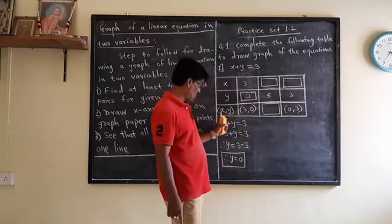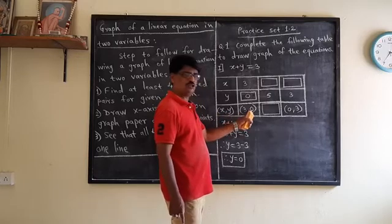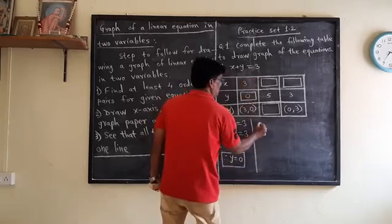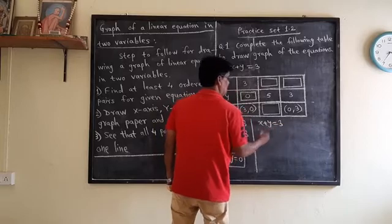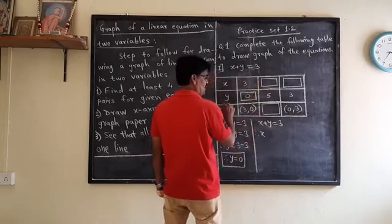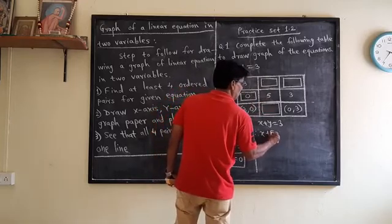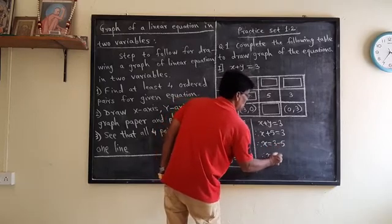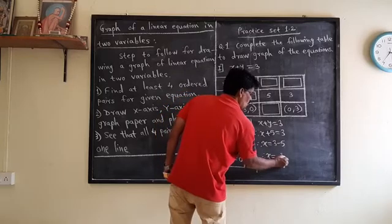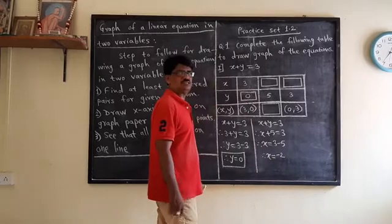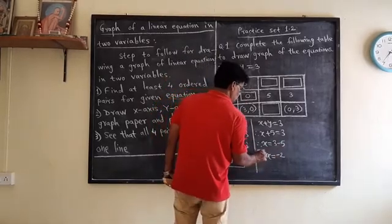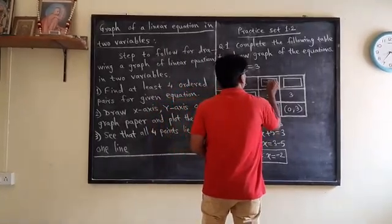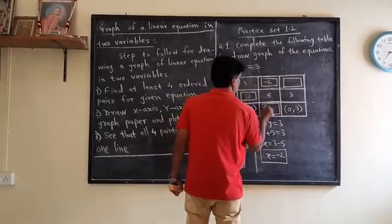x is equal to 0. x plus y is equal to 3. Therefore y is equal to 0. x is equal to 0, value is equal to 3. x is equal to 3 minus 5. x is equal to 0. 2 minus 3 is 2. x is equal to minus 2. This is x equals minus 2, the level of minus 2.